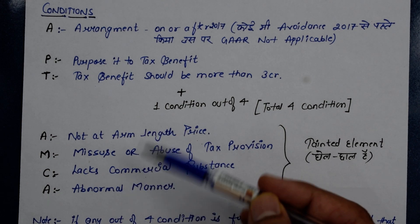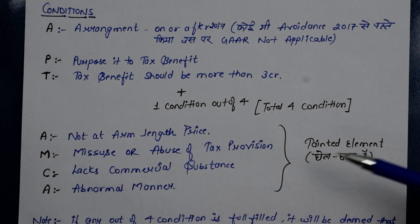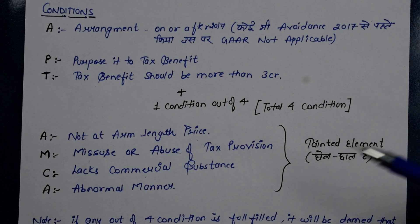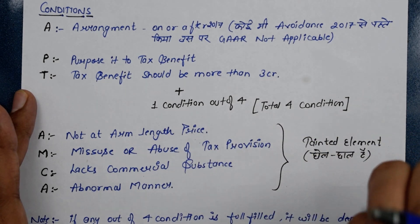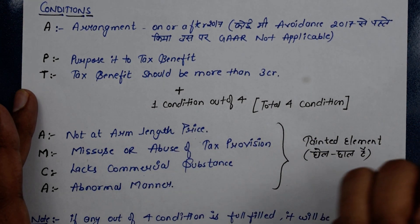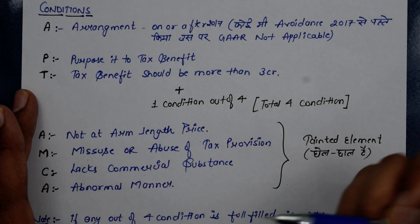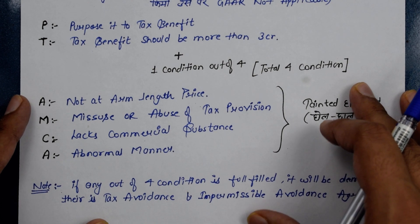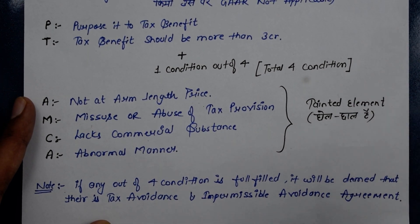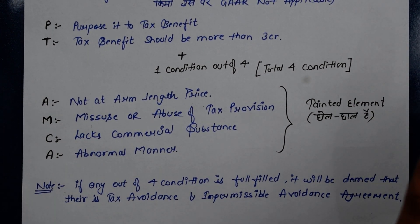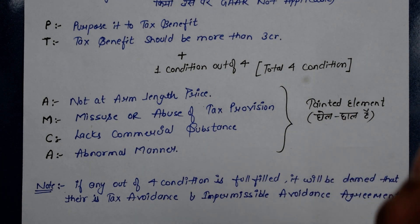If a tentative impermissible element is found, then GAAR can be invoked and the arrangement comes under GAAR. As a result, the tax authority can control the arrangement, and the taxpayer will be required to pay full tax. The tax benefit that was being claimed will be denied.